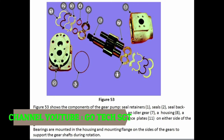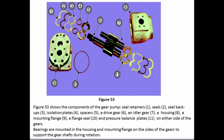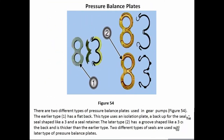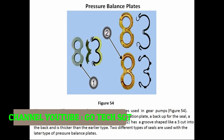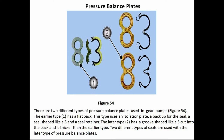Figure 53 shows the components of the gear pump: seal retainers (1), seals (2), seal backups (3), isolation plates (4), spacers (5), a drive gear (6), an idler gear (7), a housing (8), a mounting flange (9), a flanged seal (10), and pressure balance plates (11) on either side of the gears. Bearings are mounted in the housing and mounting flange on the sides of the gears to support the gear shafts during rotation. There are two different types of pressure balance plates used in gear pumps (Figure 54): the earlier type has a flat back and uses an isolation plate, a backup, a seal shaped like a figure-3, and a seal retainer. The later type has a groove shaped like a figure-3 cut into the back and is thicker than the earlier type.